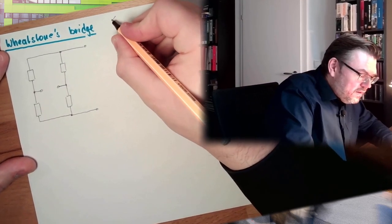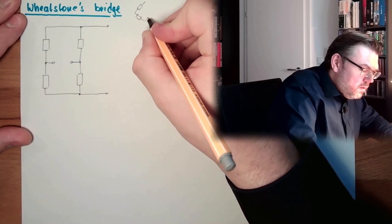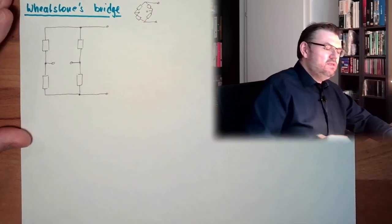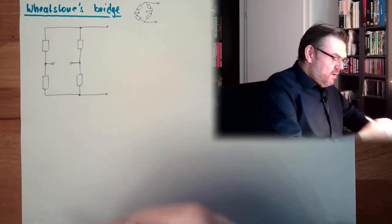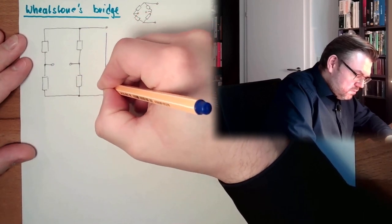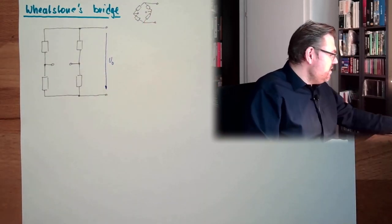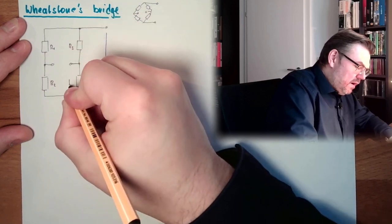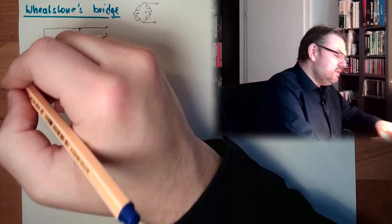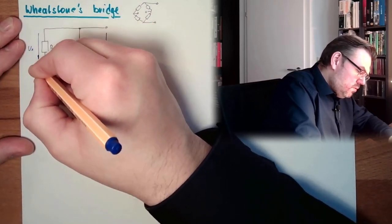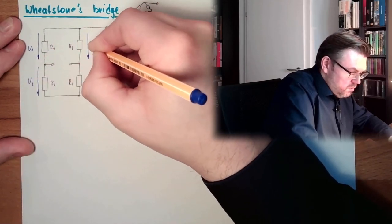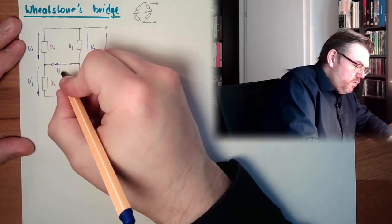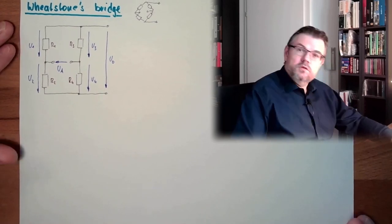This is usually drawn like that — hopefully you can see it's equivalent. So we have here a supply voltage U0. We have here two resistors R1 and R2, and we also have here R3 and R4. At each resistor we have a corresponding voltage, and here this is the voltage we are measuring. This is Ua — the output voltage, the voltage we want to determine.